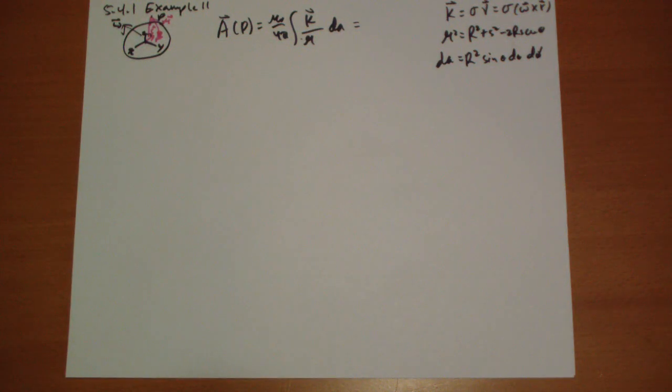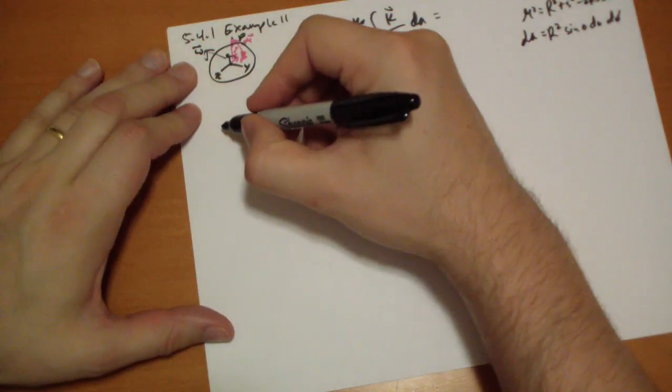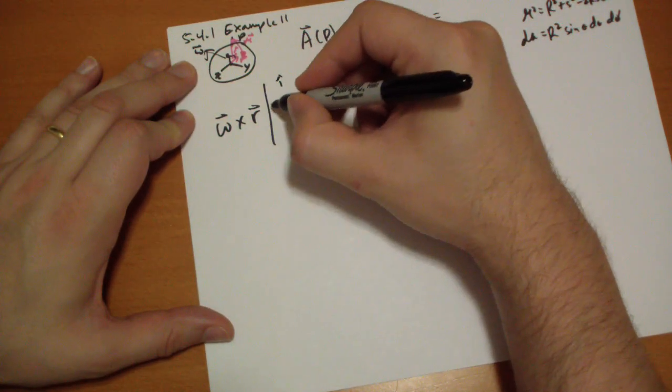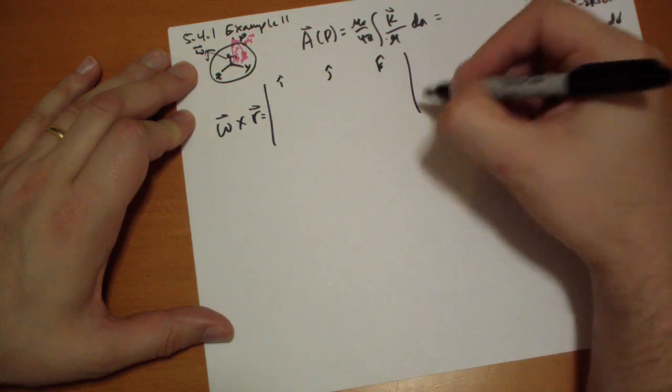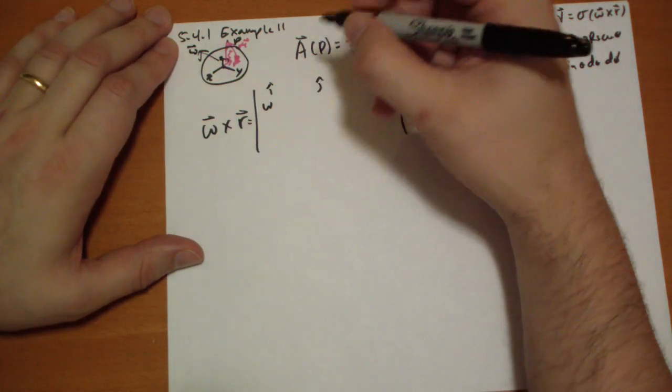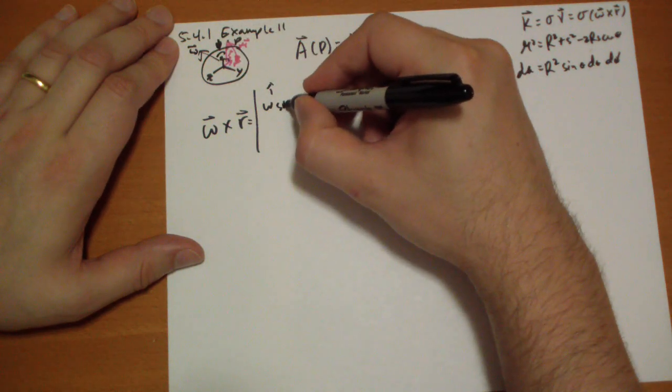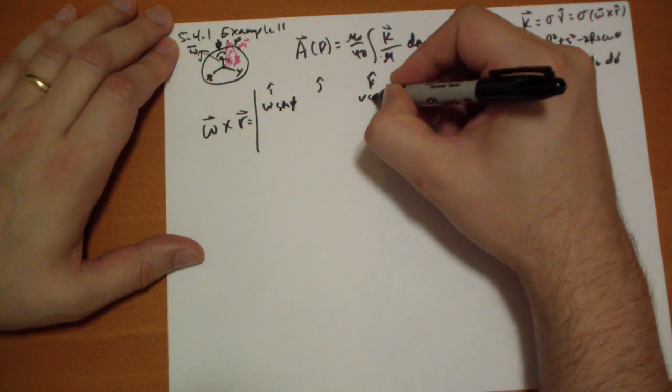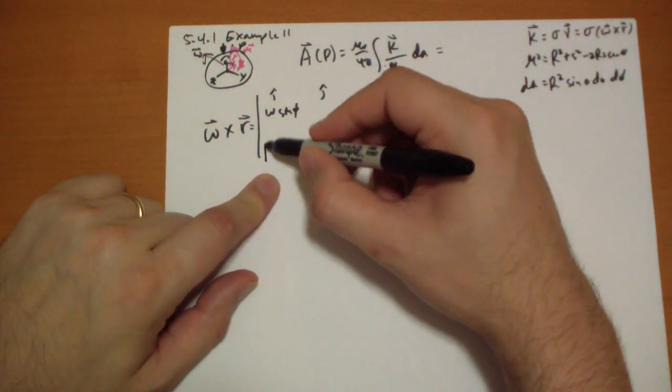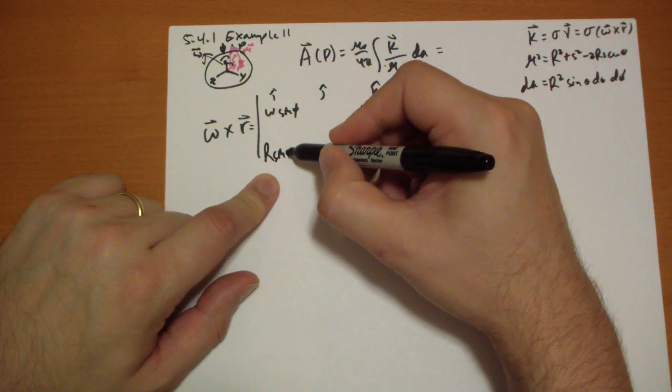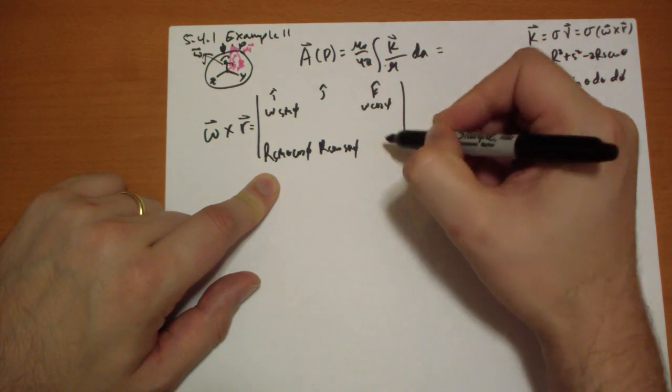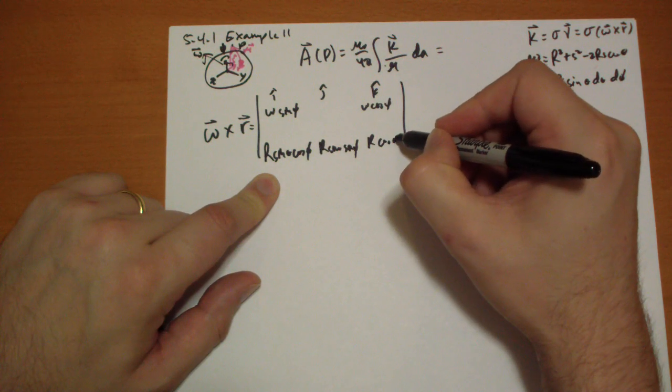Now, let's look at omega cross R. So omega is lying in the XZ plane, so it's going to have omega sine C, omega cosine C. And then the R is going to be R sine theta cos phi, R sine theta sine phi, and then R cos theta.